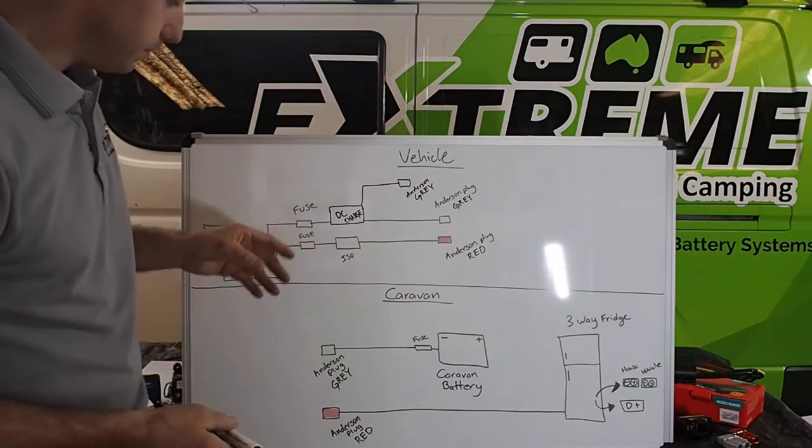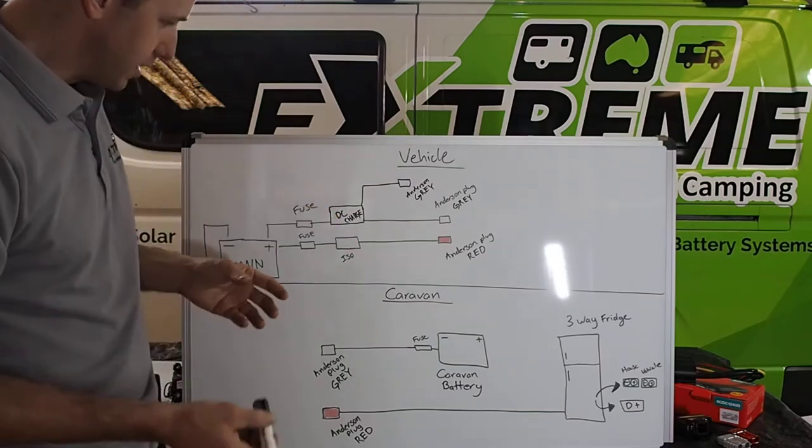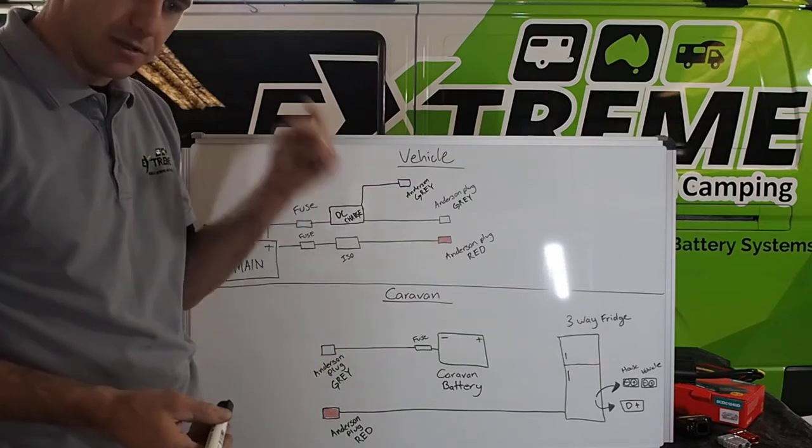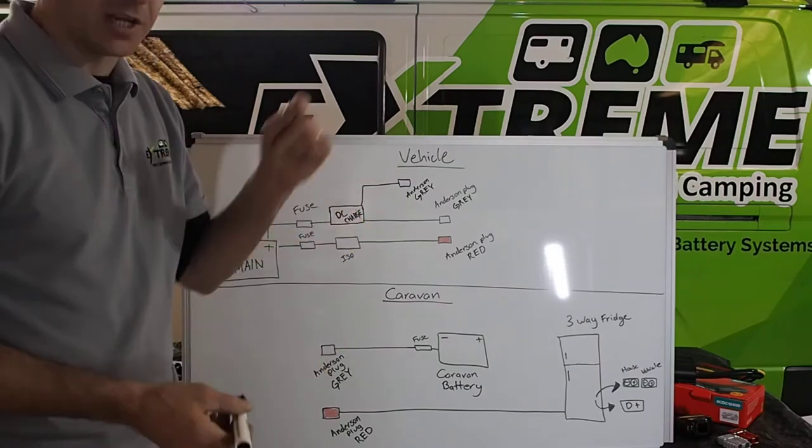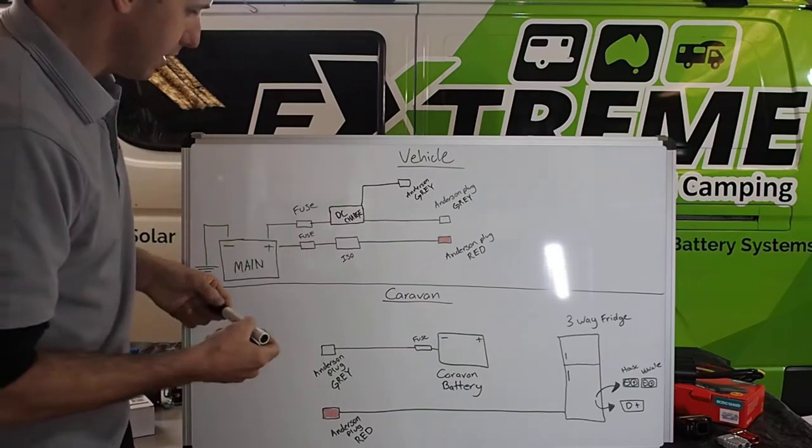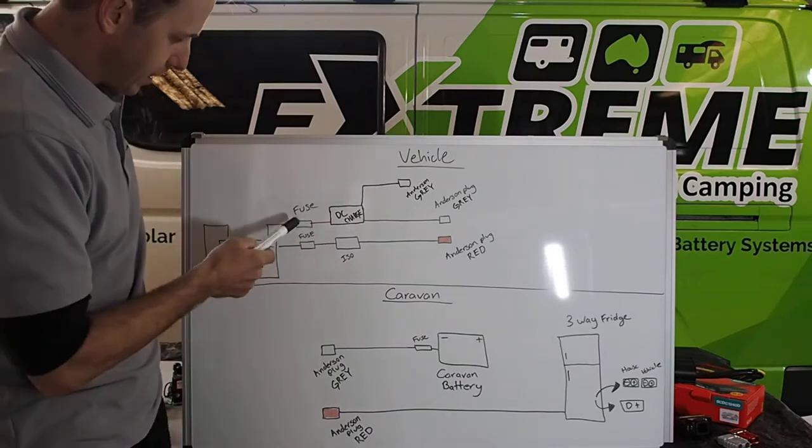The way it works is a DC charger is an isolator as well. So, as the voltage rises, it'll turn on and spit out the charger you've programmed before. In this case, we just work with AGMs, so 14.4 volts.